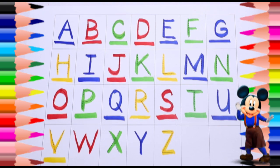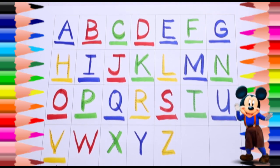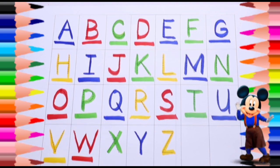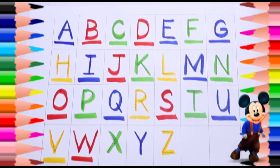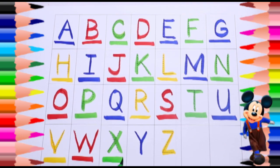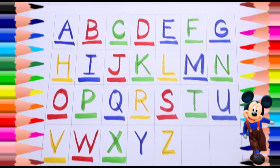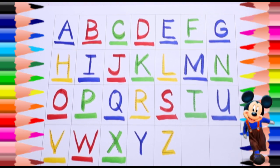Red color W, W for watch. Green color X, X for xylophone. Blue color Y, Y for yak.